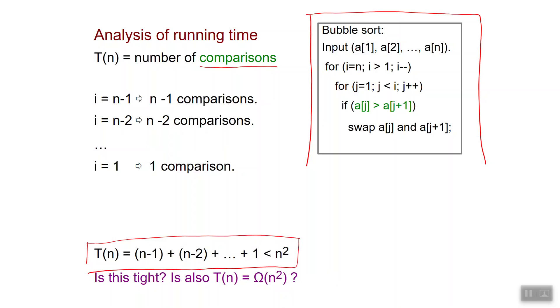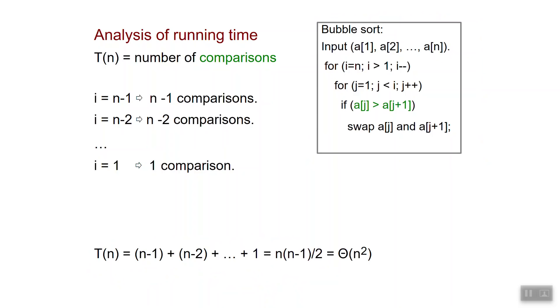Okay, so the running time is at most n-square. And now we can ask ourselves, is this thing tight? Okay, is this also a lower bound? Is it true that T of n is also omega of n-square? And the answer is yes. In fact, this sum here has a closed form which is this one here: n times n minus 1 over 2, which is theta of n-square.